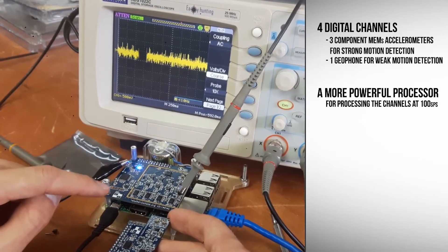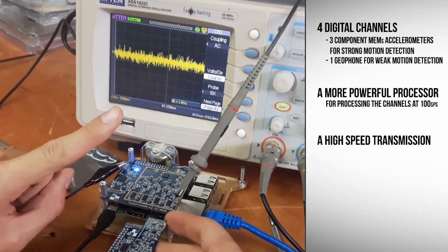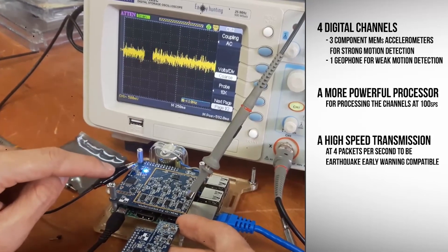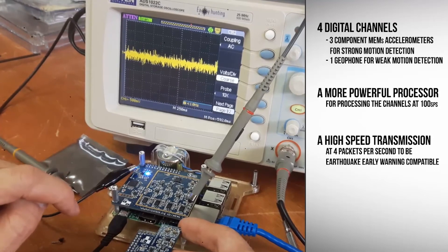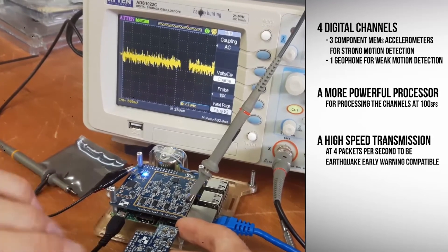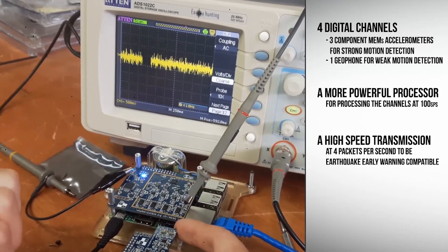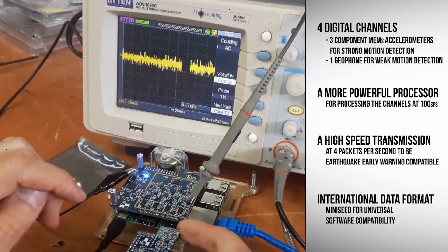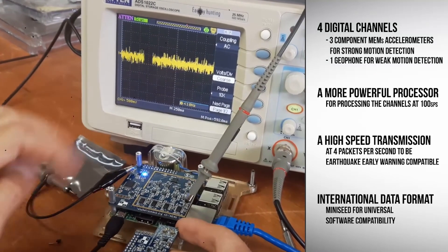We were also able to boost the transmission rate from the original one packet per second to four, making the Raspberry Shake 4D earthquake early warning compatible. All of the data continues to be transmitted in an industry-standard mini-seed format that is compatible with all industry software.